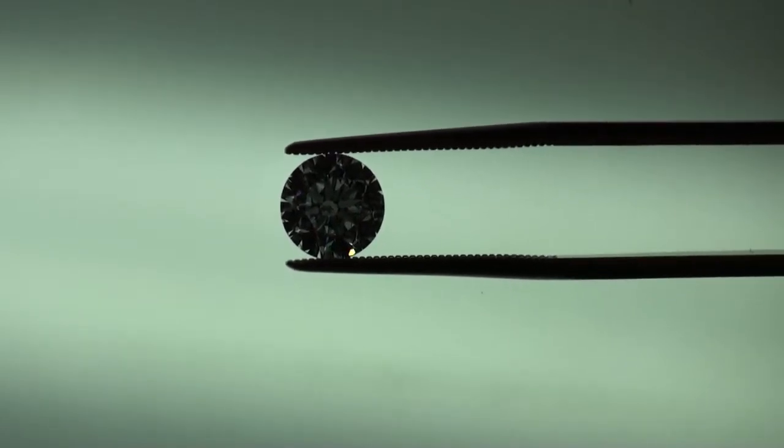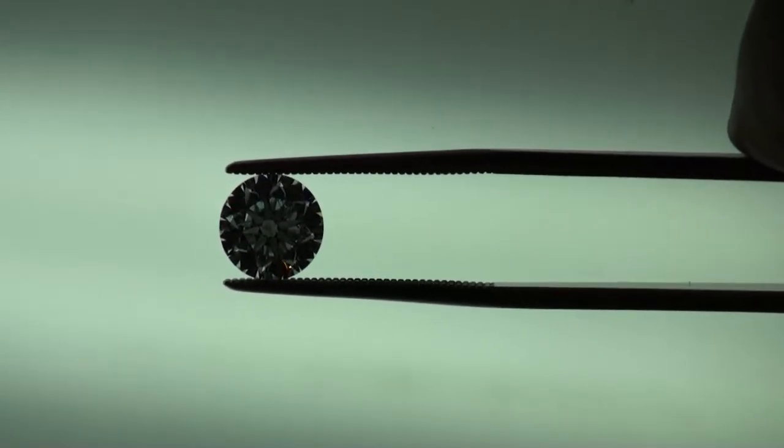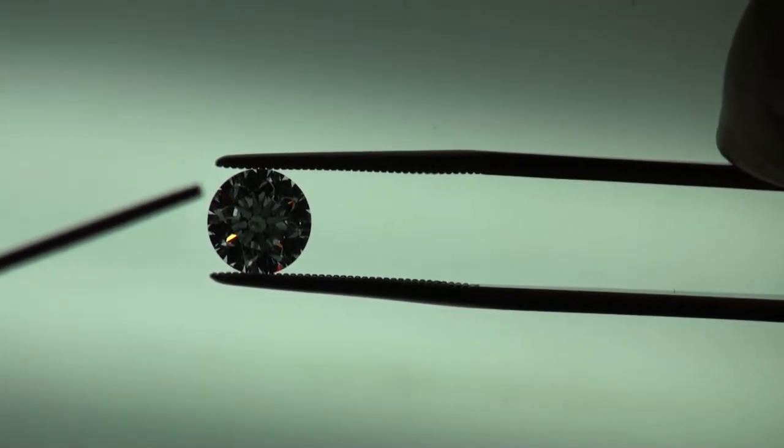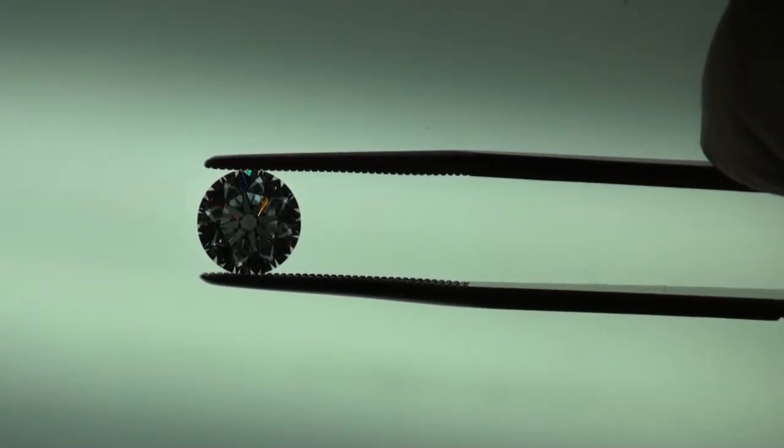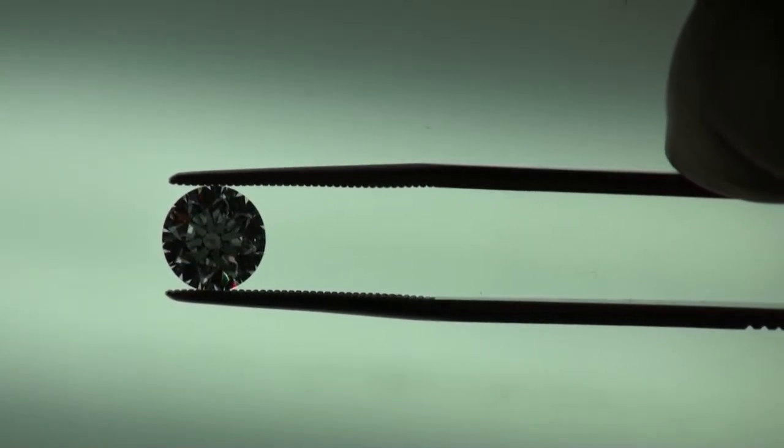And by the way, that one inclusion that did reach towards the center of the diamond, it would be right over here somewhere, going into the diamond. So yeah, very rare for an SI2 to be this clean.